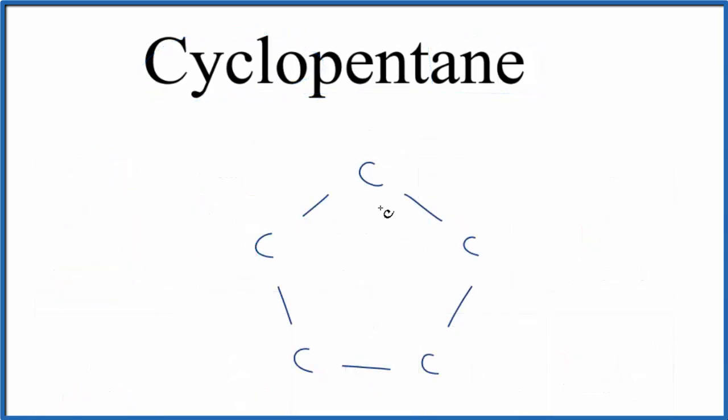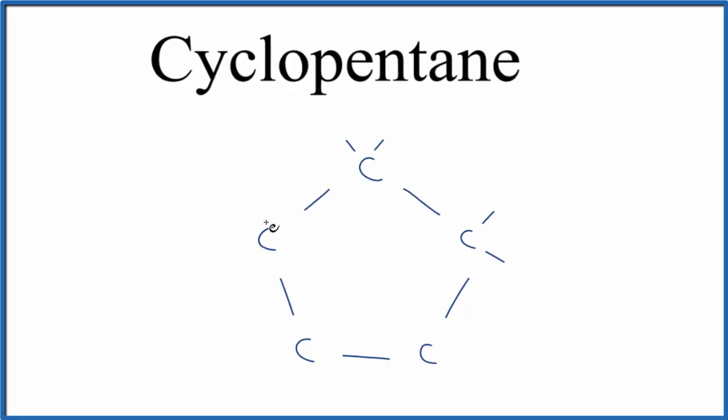So here's our ring with five carbons, and now we need to put hydrogens around. Carbon will have four bonds, so each carbon needs to have two bonds. So each of these two bonds will go to hydrogens.